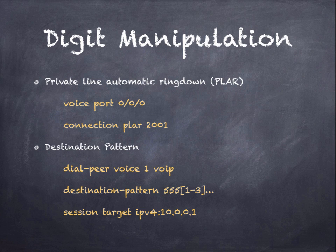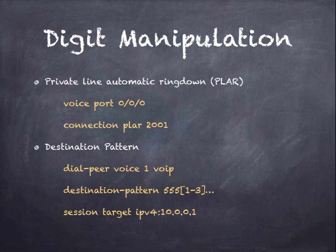Private Line Automatic Ring Down, or PLAR, is commonly used on an analog voice port to map it to an internal extension. This allows any outside call to ring down to one phone. For example, a receptionist at extension 2001 — anyone calling in on the analog line will have the router route that call to 2001. It's a nice, easy way to send all incoming calls to a specific extension.